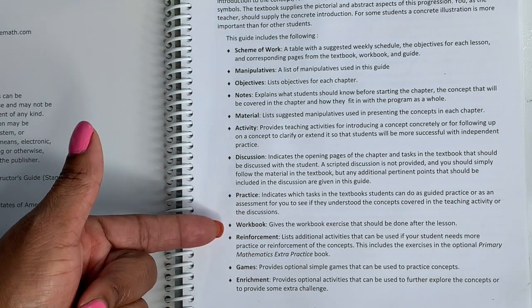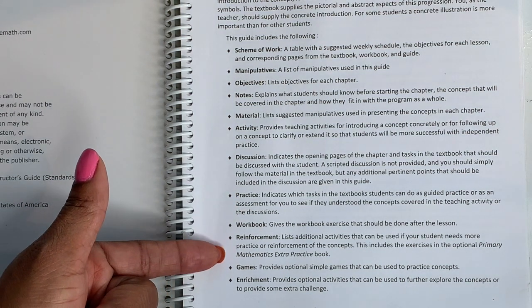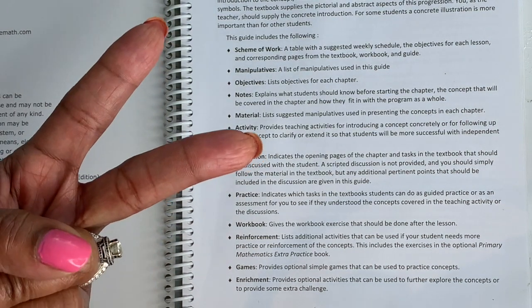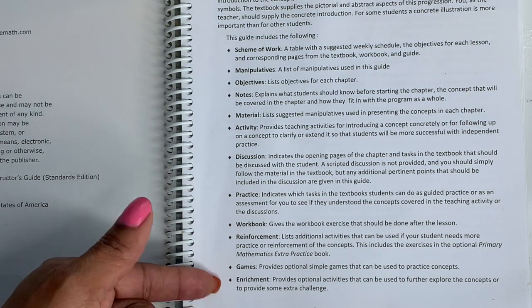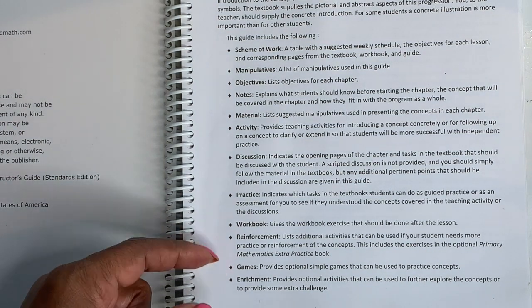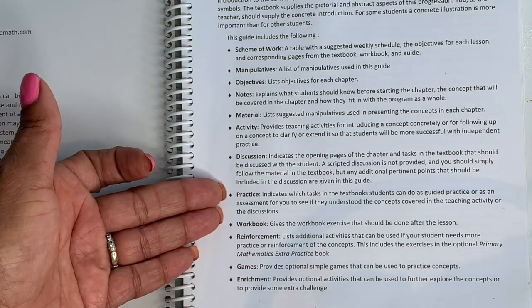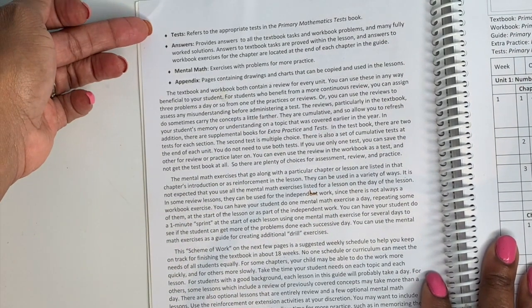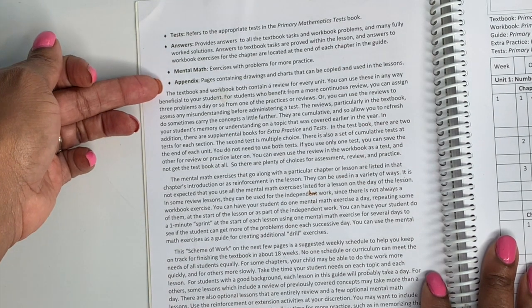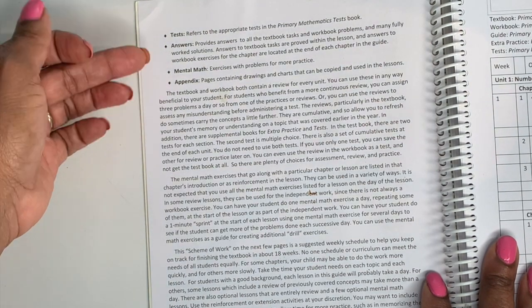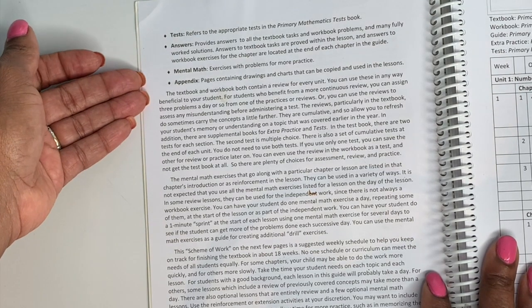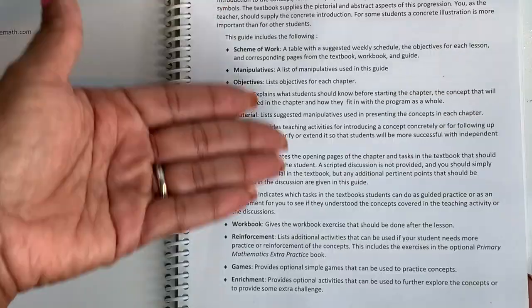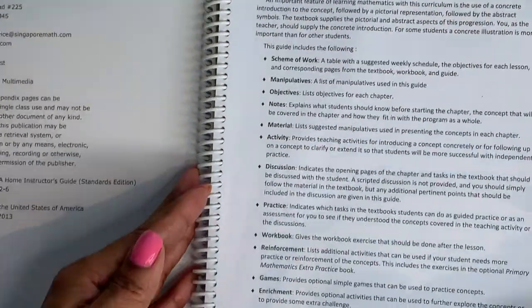So once you get to practice all the way down, these are optional. These are things that you can buy in addition. Do you need these? No, you do not. Will they help? Possibly, and yes, depends on you. There is a practice book, there is a workbook, and the reinforcements would be an additional extra practice book. So there are two practice books. And then you have games and enrichment. The challenging word problems are additional things you can use. And on the back, you have the test, answers, mental math, and appendix. So remember, all of these are additional.